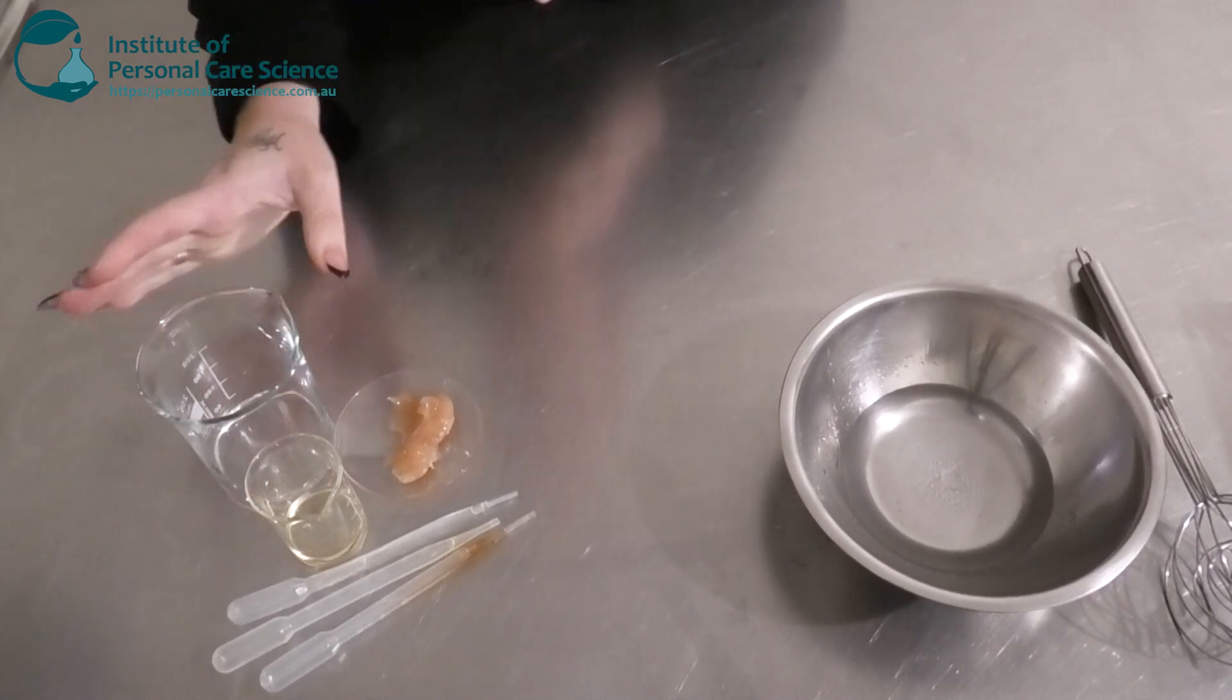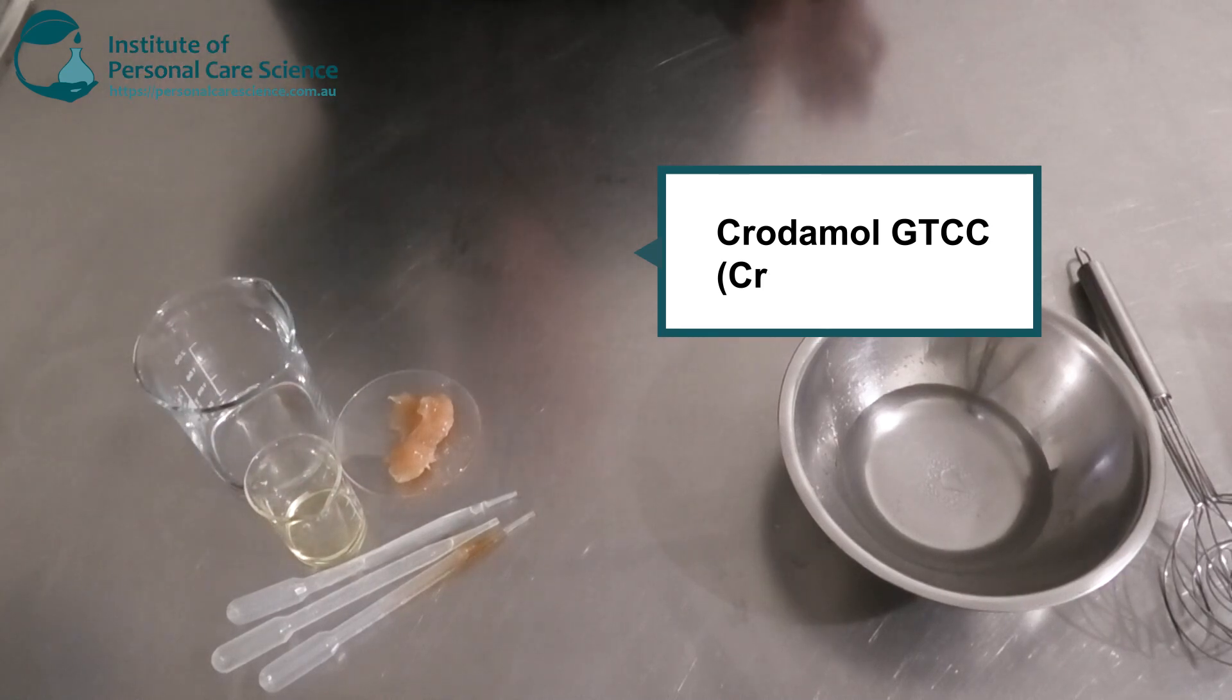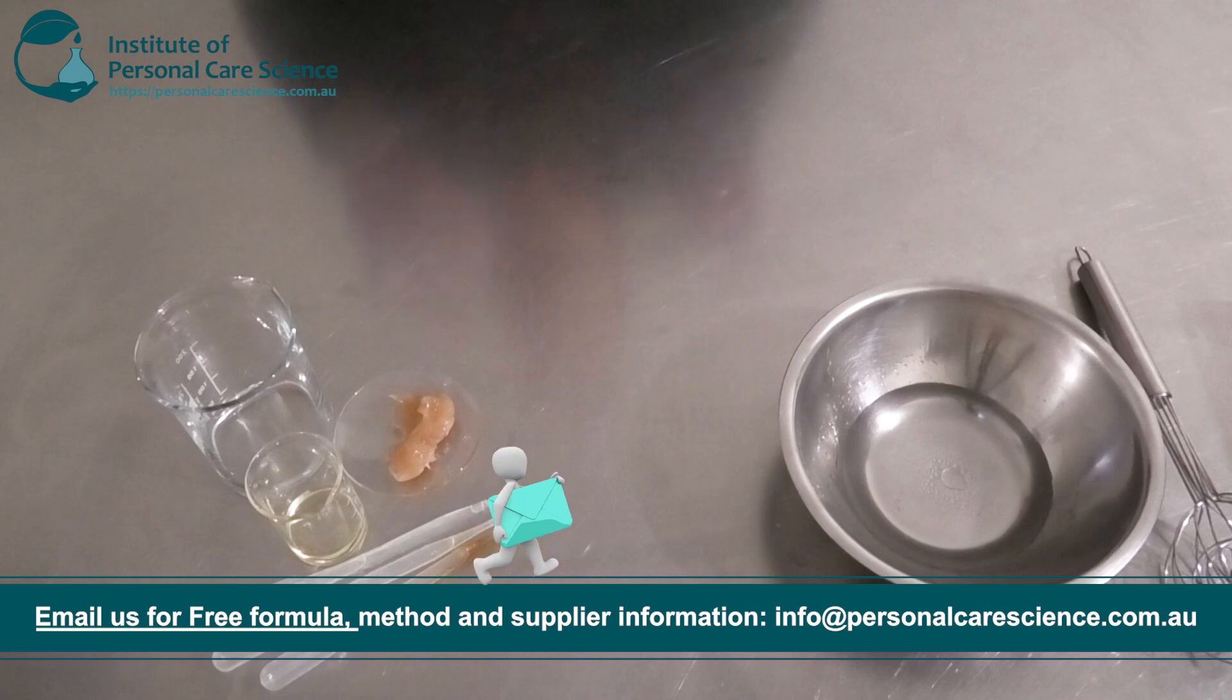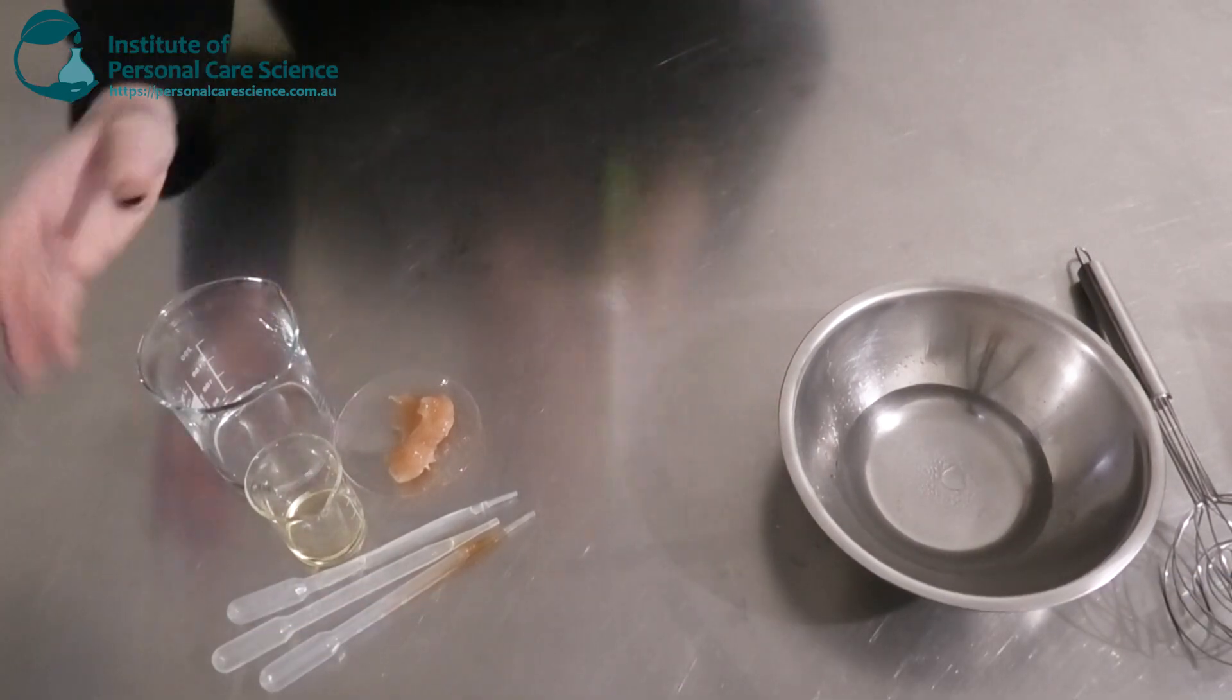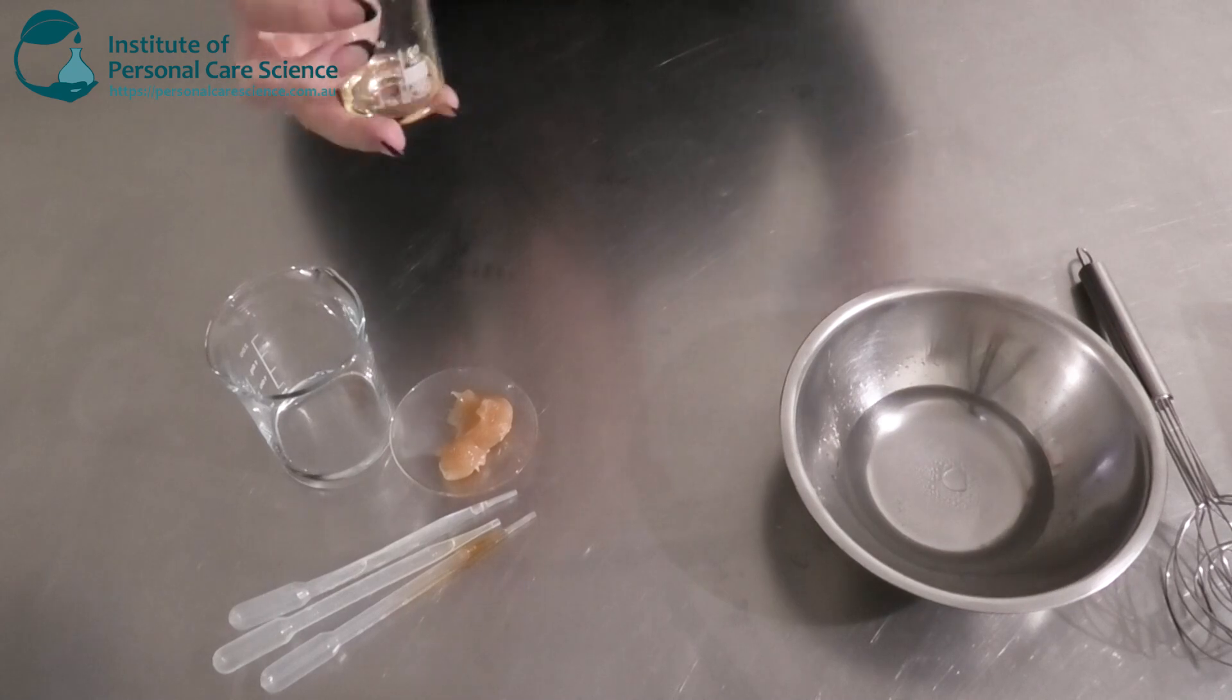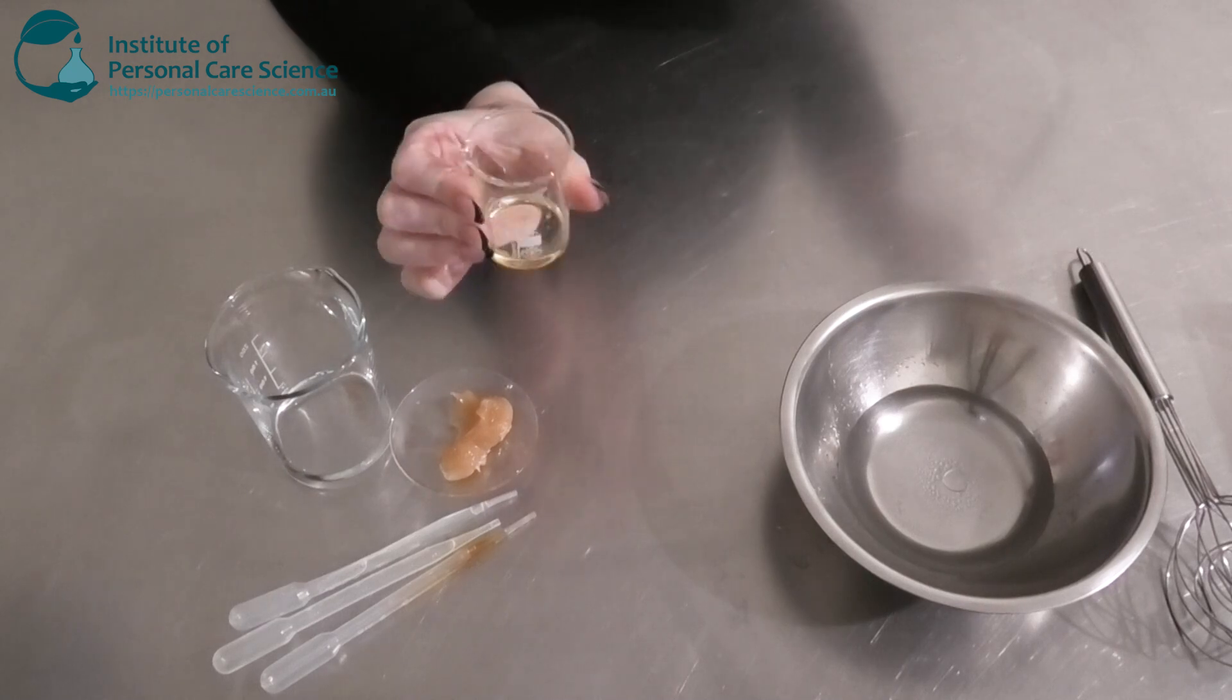So I've got in my beaker, some caprylic capric triglycerides or Crodarom GTCC. This is a medium skin fill triglyceride. So in night creams or creams that are for anti-aging benefits, you do want to add a bit more emolliency. You don't want anything too light. You want a bit more heaviness, but not too much. Now I am going to pair it with some jojoba oil. Jojoba oil is really good at balancing. It's actually a wax ester technically. So it is quite light when it comes to feel.